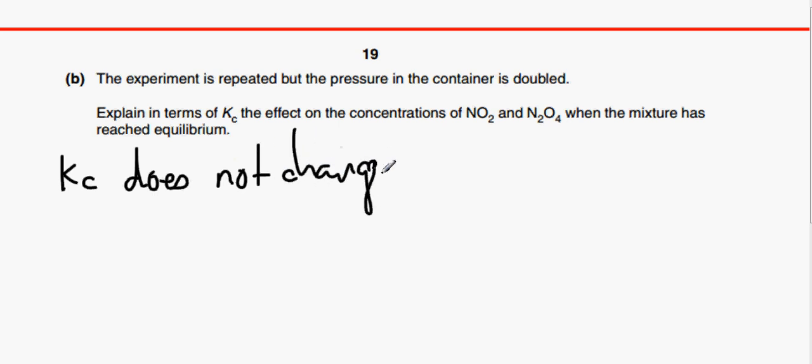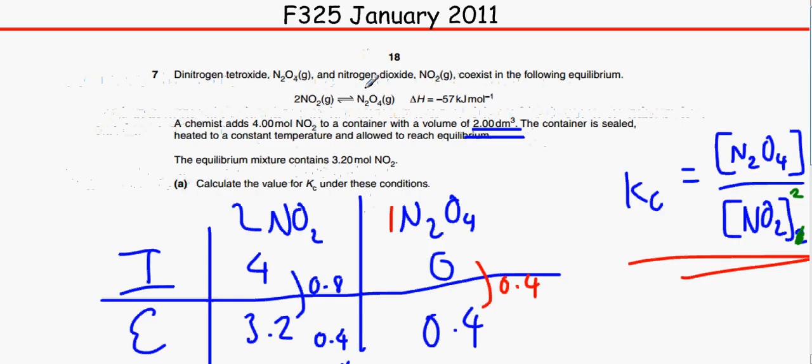So first thing you write, Kc does not change, or the value of Kc does not change if you want to be specific. Now you need to talk about what happens when the pressure in the container doubles with respect to these two. So if you think about it, if we go back to the equation over here, if we increase, if we double the pressure, obviously this concentration here would increase more than this one would.